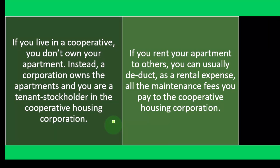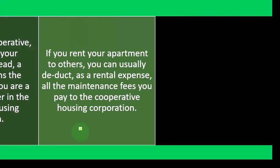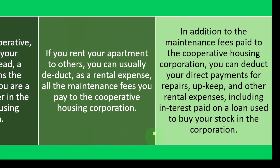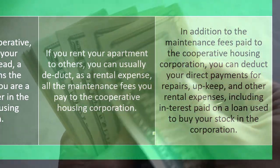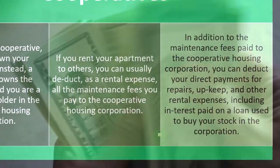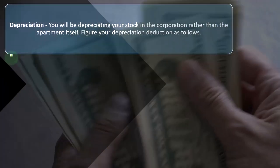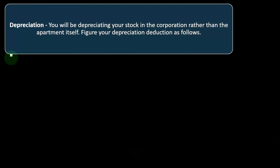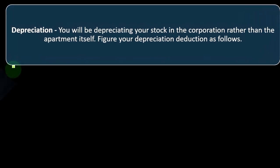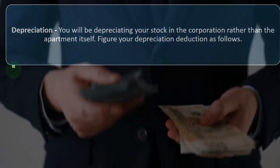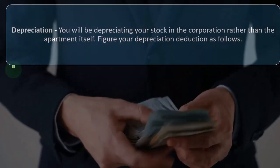If you rent your cooperative apartment to others, you can usually deduct as a rental expense all the maintenance fees you pay to the cooperative housing corporation. In addition to those maintenance fees, you can deduct your direct payments for repairs, upkeep, and other rental expenses, including interest paid on a loan used to buy your stock in the corporation. For depreciation, you will be depreciating your stock in the corporation rather than the apartment itself.